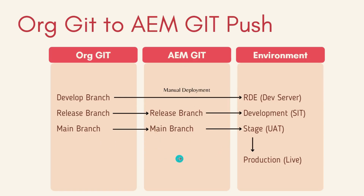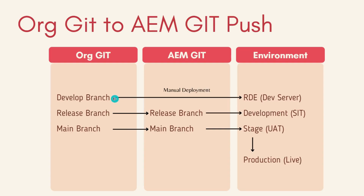When you create the AEM Git, you just have the main branch. What you need to do first is check out this main branch from AEM directly onto your local, and then from your local, push your code onto your organizational Git main branch. This is the first step to initialize the Git in your organization. From that main branch, you can create the release branch and develop branch. From the develop branch, developers can create individual feature branches and start development. The develop branch code can be reserved to go into the RDE — it is directly deployed from the developer's local onto the RDE using AIO commands.